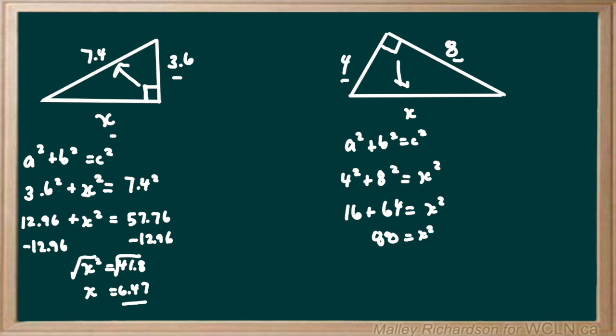To isolate for x we take the square root of both sides, and we're left with x equaling the square root of 80, which is 8.94. So the length of our unknown side is 8.94 meters.